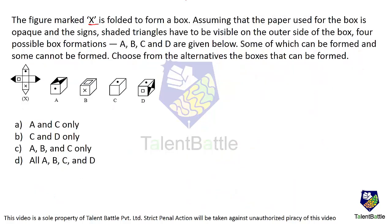The figure marked X is folded to form a box. Assuming the paper is opaque and the shaded triangles must be visible on the outer side, four possible box formations A, B, C, D are given. Some can be formed and some cannot. If you check the alternatives, A occurs three times in three alternatives. So if we find out whether A is a possible formation, we can directly get the answer — if A is not possible, the answer is directly B.